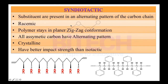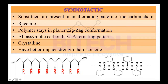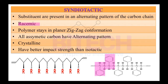The main features of syndiotactic polymers: substituents are in an alternating pattern along the carbon chain, and they are always racemic — if one carbon is optically active, the next is optically inactive. These inversions cancel out, making the polymer racemic overall. Syndiotactic polymers have better impact strength than isotactic ones.